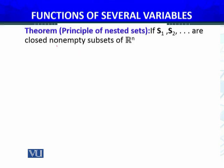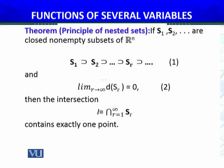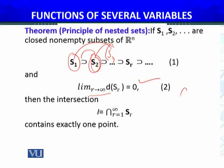So the principle of nested sets states that: if S1, S2, S3, ... are closed, non-empty subsets of Rn such that S1 is the largest set and other sets are contained in each other — S2 ⊂ S1, S3 ⊂ S2, and so on — this is an infinite collection of sets, and their diameters are such that as R approaches infinity, diameter of SR approaches 0. यह sets छोटे छोटे होते जा रहे हैं — diameter उनका 0 की तरफ है whenever R approaches infinity।